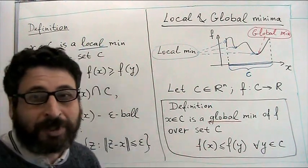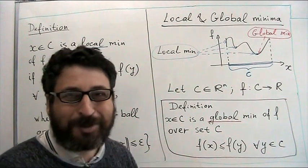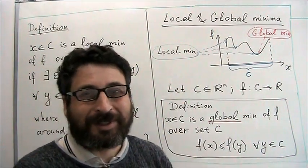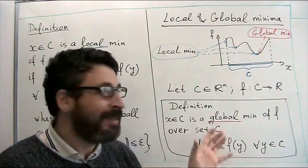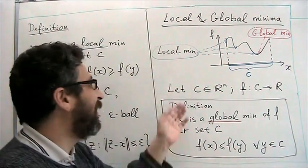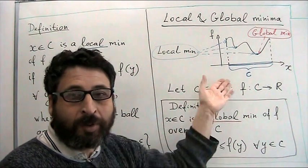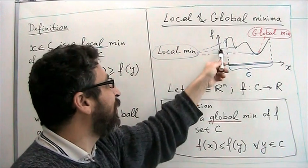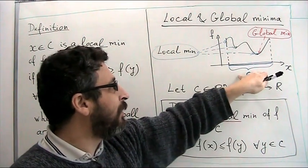Now we are gradually approaching the main topic of our course: finding the minimum of a function. First let us define what a minimum is. Here we will start by distinguishing global and local minimum. I start from a plot of some function defined over set C.